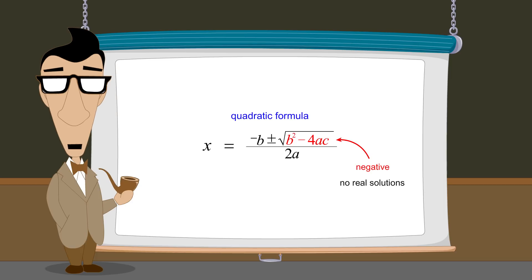However, we also saw that by extending our number system to include complex numbers, quadratic equations with negative discriminants will have complex solutions.